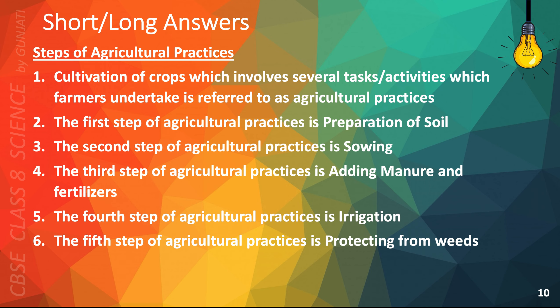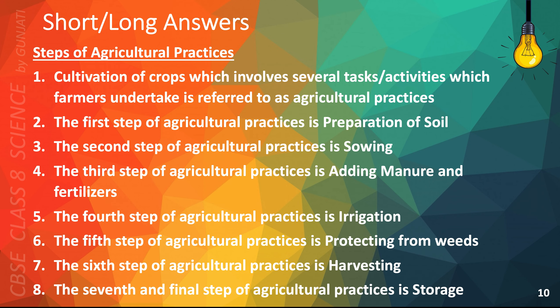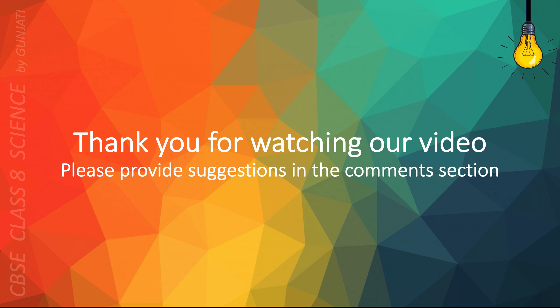The fifth step of agricultural practices is protecting from weeds. The sixth step is harvesting. The seventh and final step is storage. Thank you for watching our video. Please provide suggestions in the comment section. Thank you.